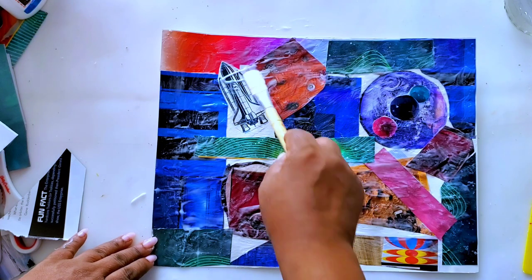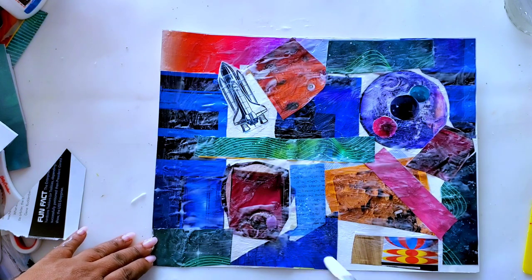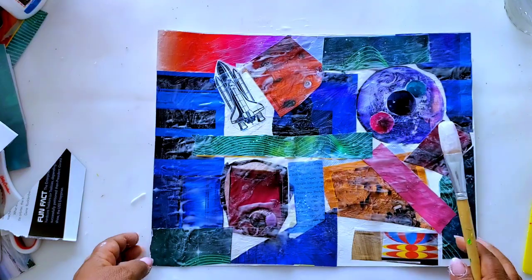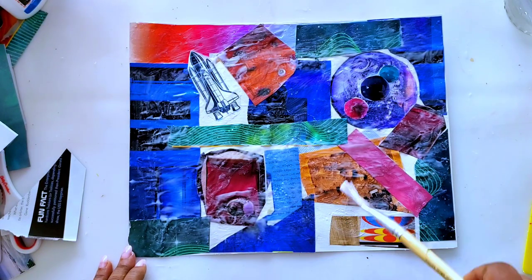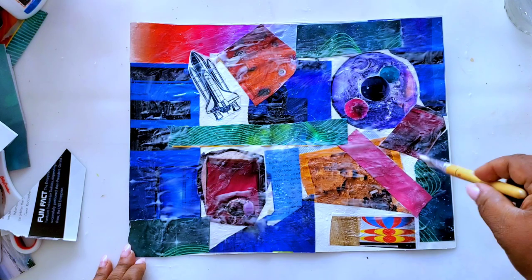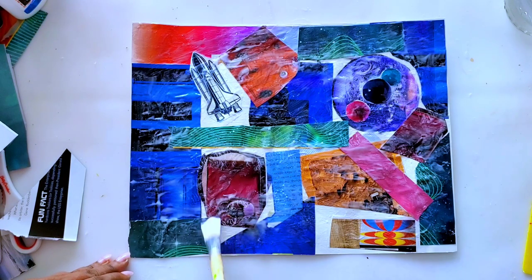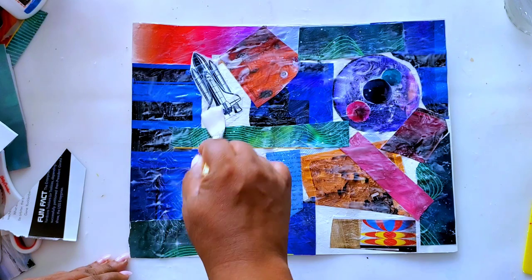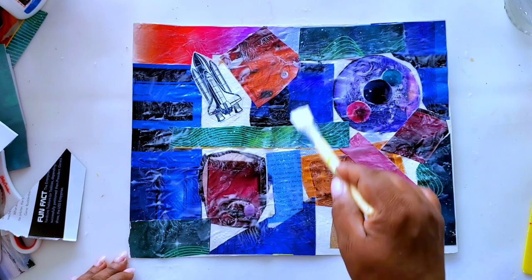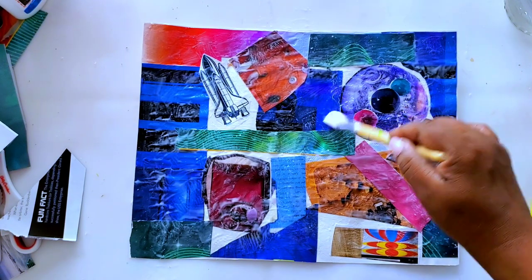And yeah, so right now I'm just spreading the glue all over the collage. And since this glue needs to really dry completely and it dries clear, once it dries then I'll come back and start painting. And yeah, it looks like it's coming along pretty well.